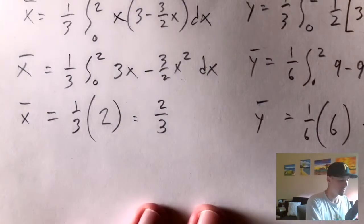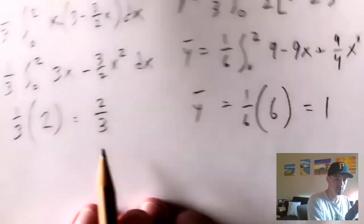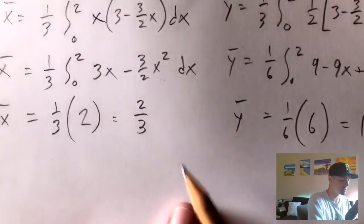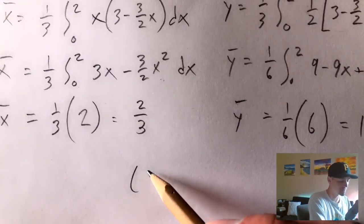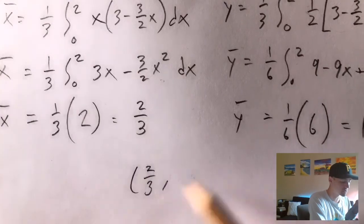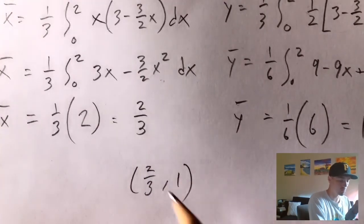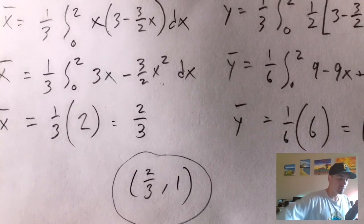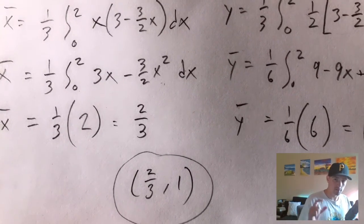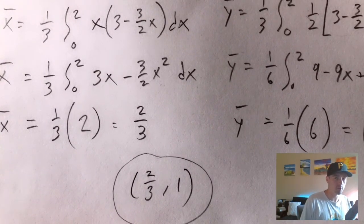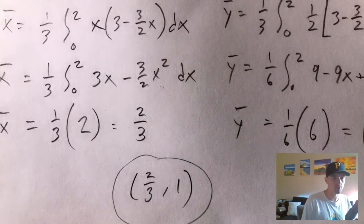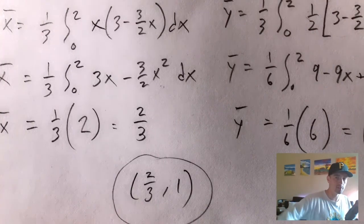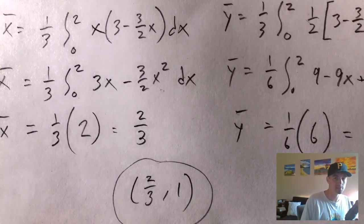So the x-coordinate of our centroid is 2/3 and the y-coordinate is 1. That tells us the centroid of this region — or the center of mass of a thin plate formed by this region — is (2/3, 1). I hope you found this video helpful. If you did, please give it a like, subscribe to my channel, and hit the bell icon so you'll be notified of new videos. Click the link below to check out my study guide — thanks and see you next time!